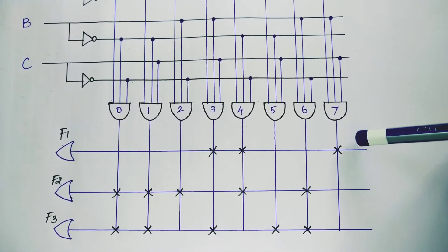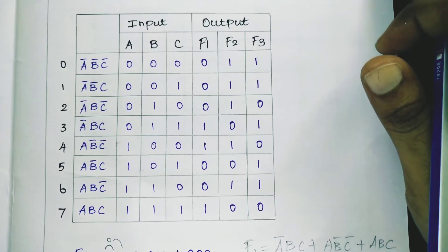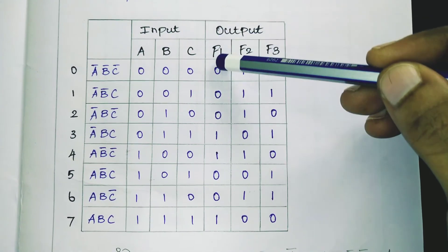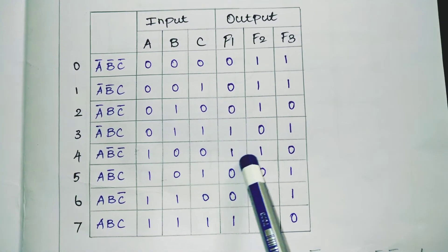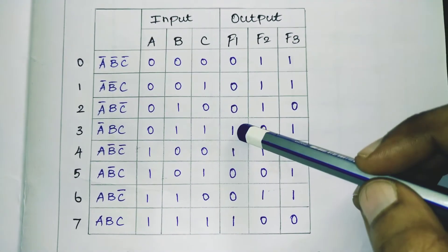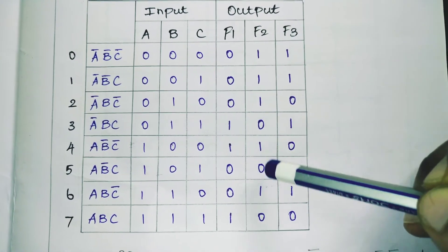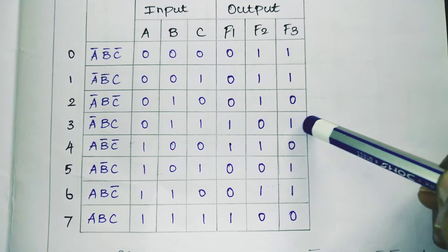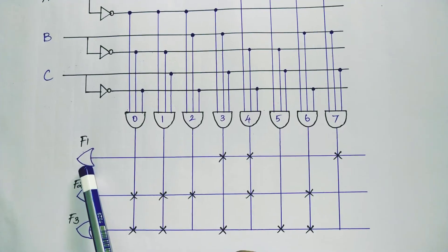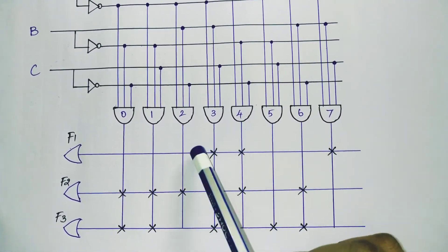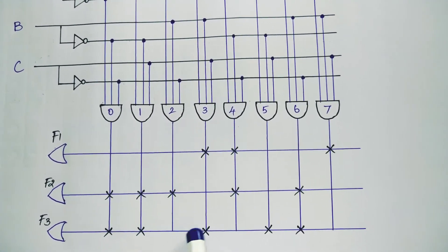Now connect the outputs for F1, F2, F3 using cross marks, because in ROM the OR gate is fusible. From the table, wherever the output is 1, place a cross mark. For F1, gates 3, 4, and 7 are ones, so put cross marks at those positions. For F2, gates 0, 1, 2, 4, and 6 are ones. For F3, gates 0, 1, 3, 5, and 6 are ones.